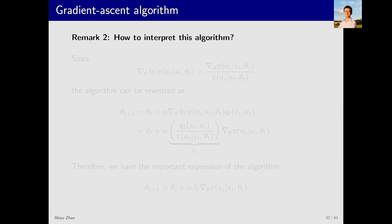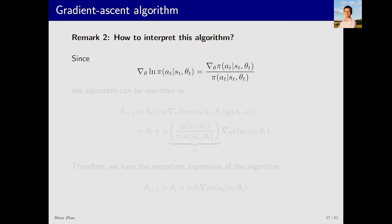Now the second important point: how to interpret this algorithm. Some might think this is just a simple gradient ascent optimizing the objective function — that's true. But let's reorganize the expression. The gradient of log pi equals the gradient of pi divided by pi, which reveals interesting properties.